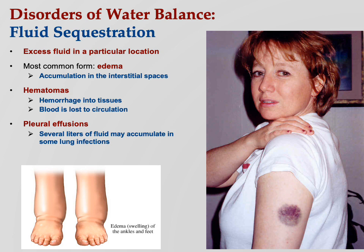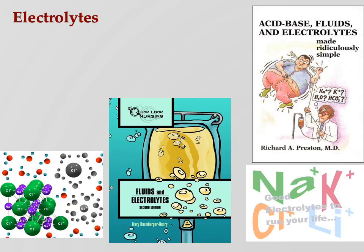Pleural effusions — fluid can accumulate in some lung infections, which is very bad. We're basically talking about coronavirus here. When fluid accumulates, there's inflammation, mucus, and excess fluid, and you can't breathe — you suffocate. You can't exchange gases. That respiratory membrane has to stay clear in order for gases to get across.